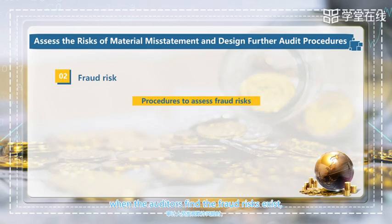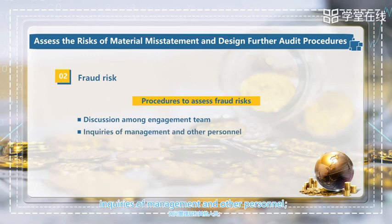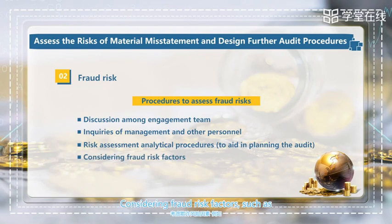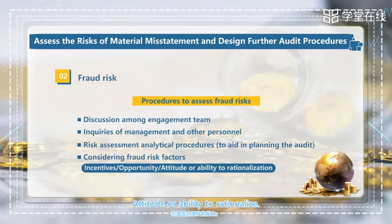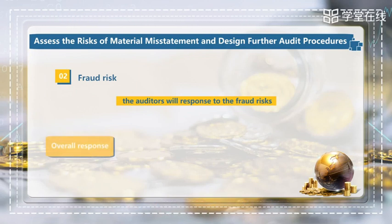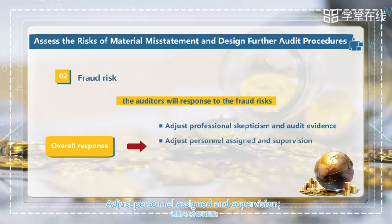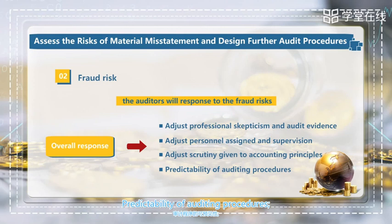When auditors find that fraud risk exists, they should implement the following procedures: discussion among the engagement team, inquiries of management and other personnel, performing risk assessment analytic procedures to aid in planning the audit, and considering fraud risk factors such as incentive, opportunity, attitude, or ability to rationalize. The auditors will then respond to the fraud risk. Overall responses include adjusting professional skepticism and audit evidence, adjusting personnel assigned and supervision, adjusting scrutiny given to accounting principles, and varying the predictability of auditing procedures.